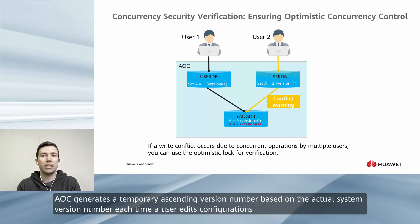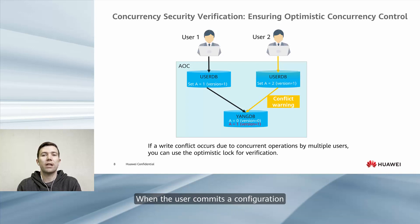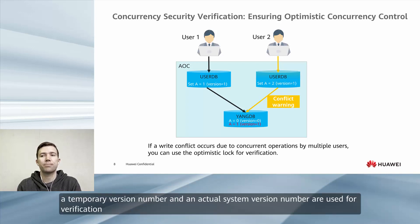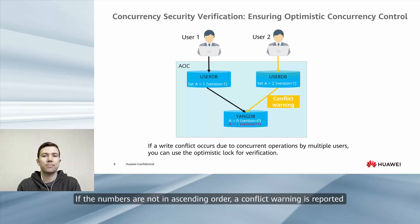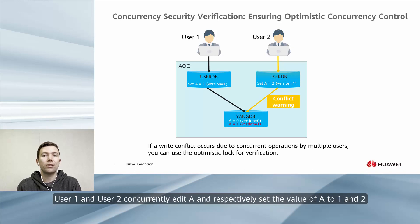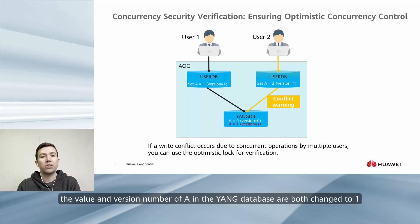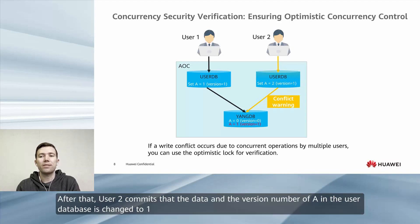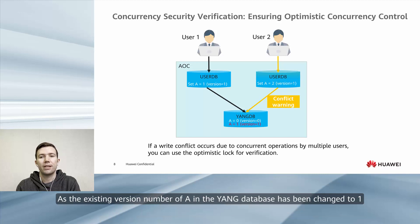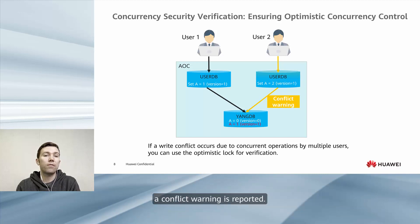AOC generates a temporary ascending version number based on the actual system version number each time a user edits configurations. When the user commits a configuration, a temporary version number and an actual system version number are used for verification. If the numbers are not in ascending order, a conflict warning is reported. For example, the value and version number of A in the YANG database are both 0. User 1 and User 2 concurrently edit A and respectively set the value of A to 1 and 2. AOC generates a temporary ascending version number of 1. When User 1 commits, the value and version number of A in the YANG database are both changed to 1. After that, when User 2 commits, the version number conflict is detected and a conflict warning is reported.